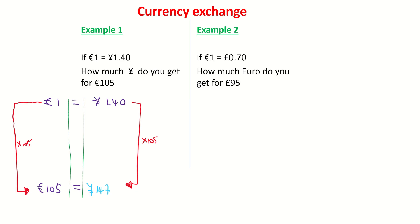Coming over and looking at example two, it's telling us that 1 euro will get me 0.70 pounds. So the question wants us to find out, how much euro do I get for 95 pounds?